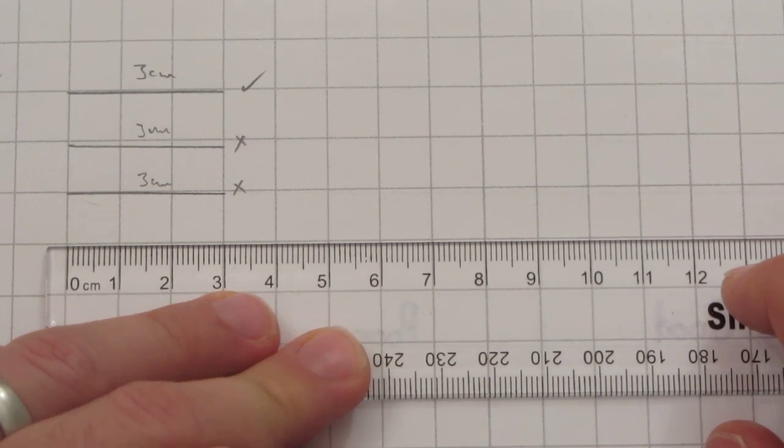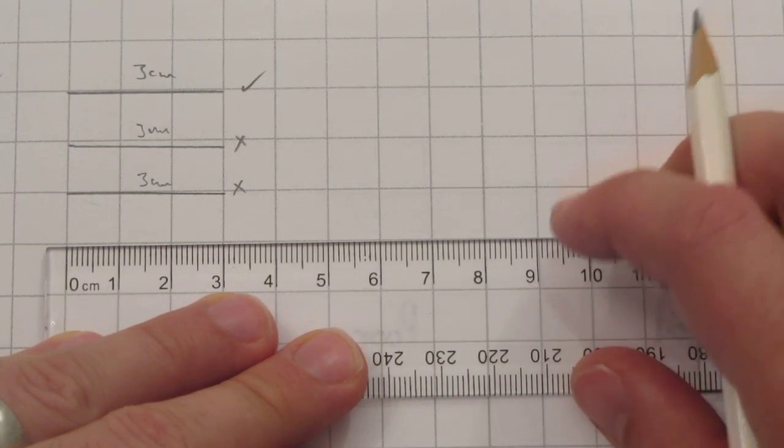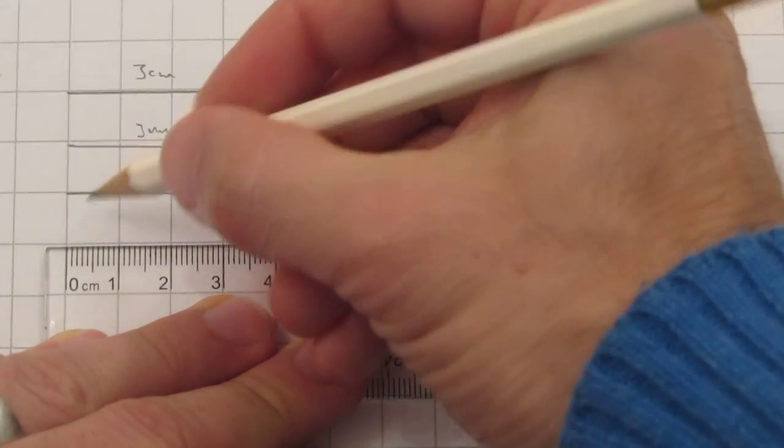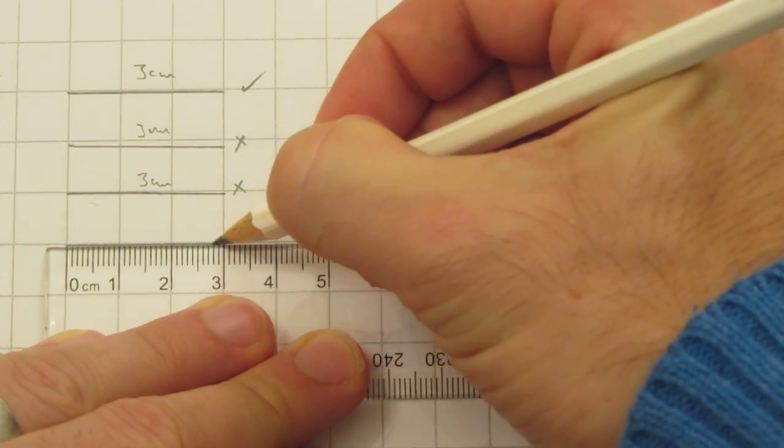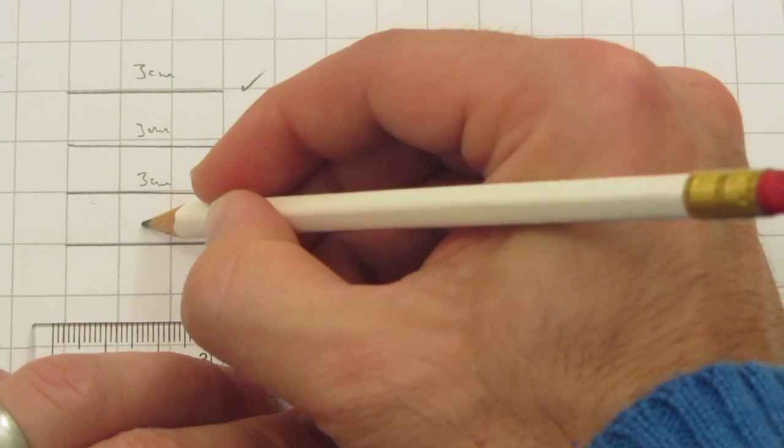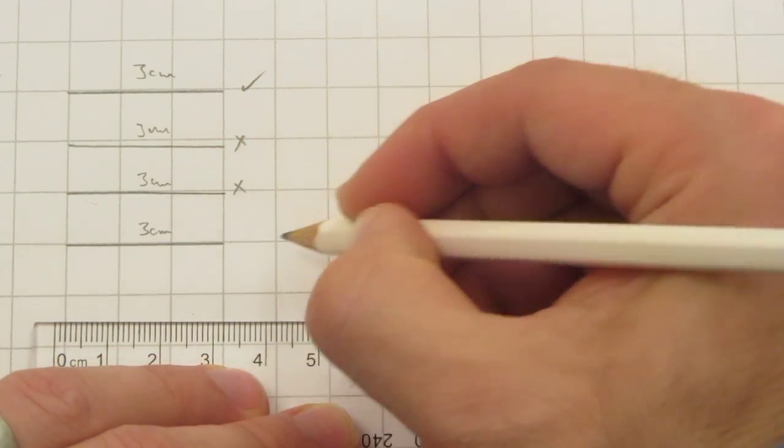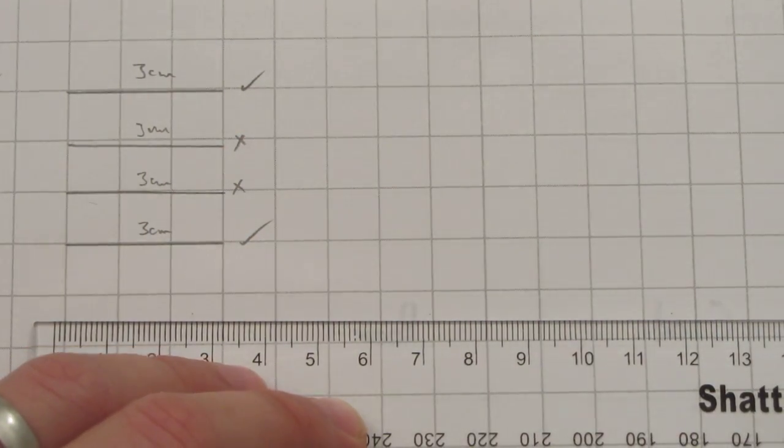This is how I do it. Line up the ruler very carefully. It's worth the extra second and then draw the line. 3cm. Done. Thanks for watching.